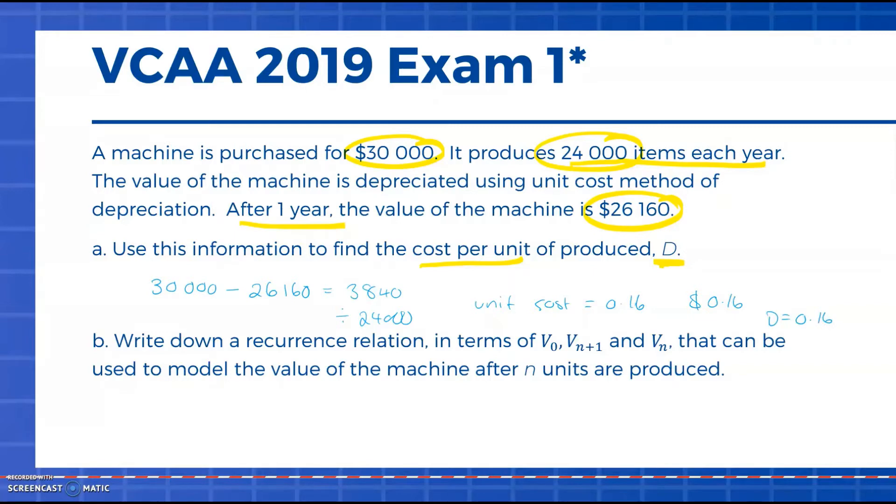In part b we can write down a recurrence relation in terms of V₀, Vₙ₊₁ and Vₙ that can be used to model this. It's important to pick up here they want the machine in units produced. We always have to state our initial value so V₀ = $30,000, and Vₙ₊₁ = Vₙ - 0.16.